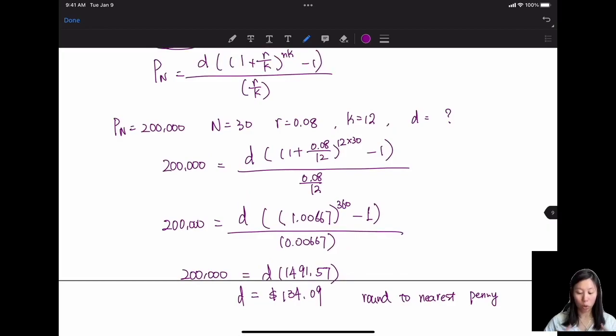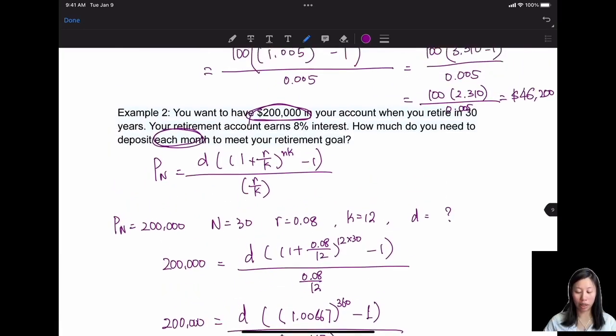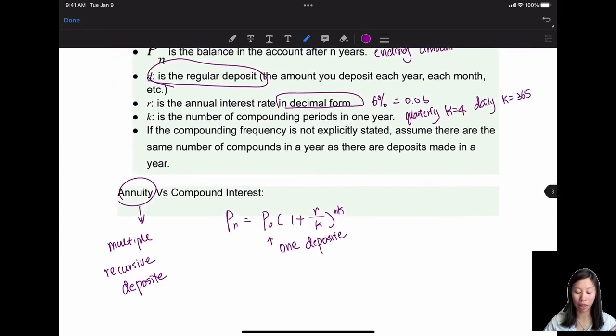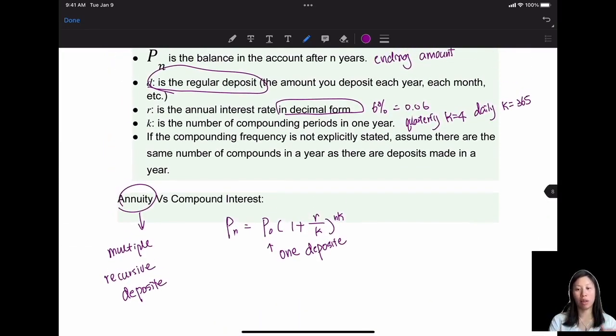I'm going to recap the difference between annuity and compound interest. When should you use compound interest? Compound interest when you have one deposit. Annuity is more like when you have multiple repeatedly recursive deposits. Okay, that's it for the day, let me know if you have other questions.